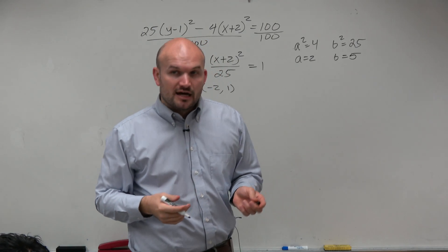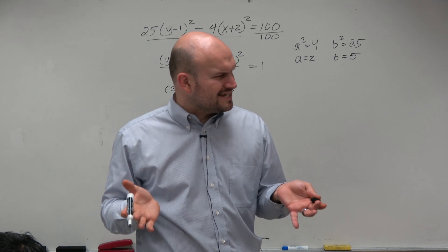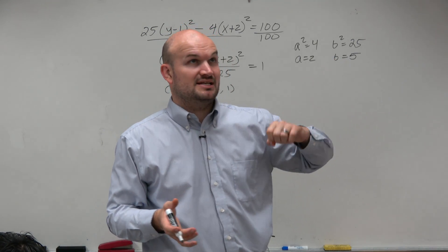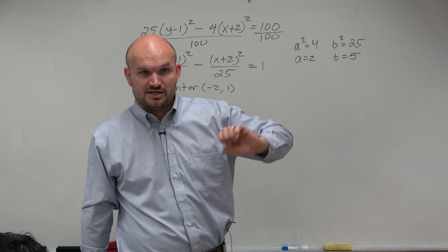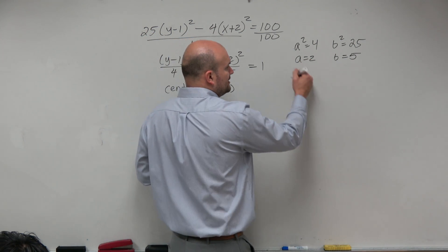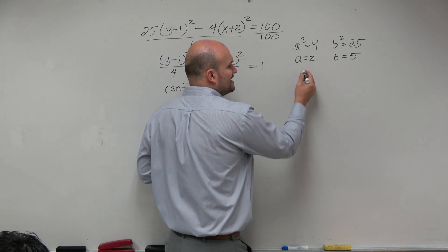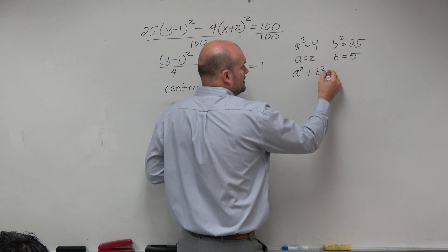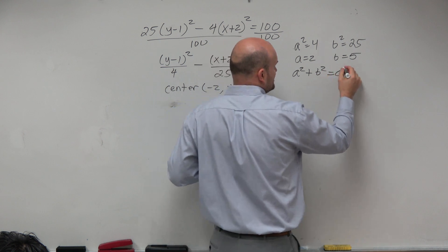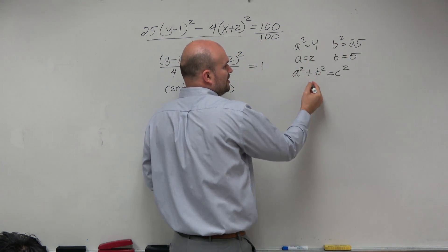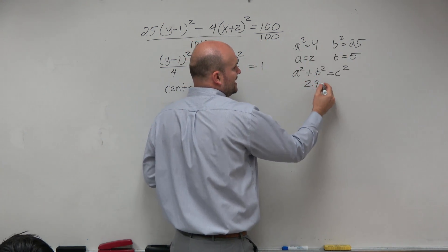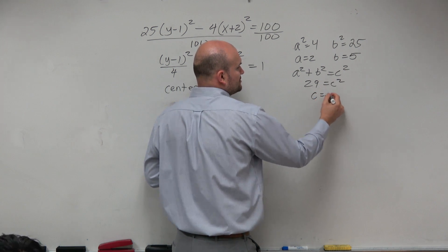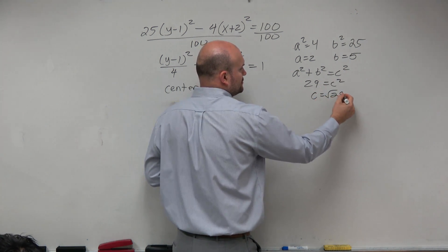Taking the square root: a is equal to 2 and b is equal to 5. Remember, a is the distance from your center to your vertices. I want to use this to find c squared, which is a squared plus b squared equals c squared. So a squared plus b squared is 29. Taking the square root of both sides, c equals the square root of 29.